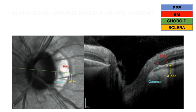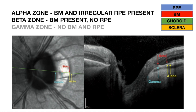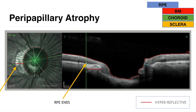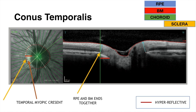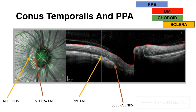In peripapillary atrophy, RPE ends before Bruch's membrane, producing hyperreflectance. In conus temporalis, RPE, Bruch's membrane, and choroid end together before the sclera, producing hyperreflectance. In PPA with conus temporalis, Bruch's membrane ends between the RPE ending and scleral ending, producing hyperreflectance.